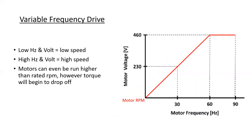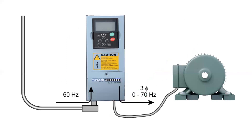At low hertz and low voltage, the motor will turn at a low RPM. At high hertz and high voltage, the motor turns at a high speed. Motors can even be run higher than the rated RPM; however, torque will begin to drop off. In this way, a VFD takes the nominal 60 Hz from the three-phase supply and provides three-phase output to the motor anywhere from zero to around 70 Hz, with specialty applications exceeding this.